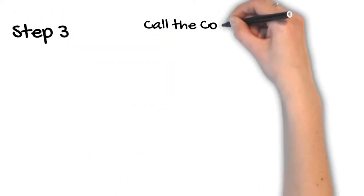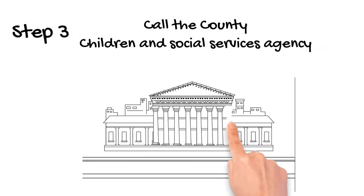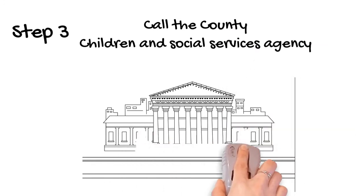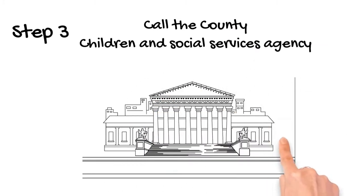Step 3: Call the county social services agency of the county where the children are from. Be ready to provide the children's full name and date of birth. Be sure to write down the name and contact information of anyone you speak with.